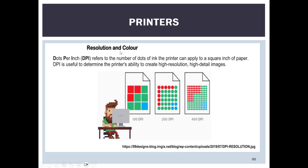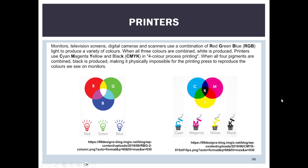For printers, resolution is measured in dots per inch (DPI) — the number of dots of ink the printer can apply to a square inch of paper. You can see what 100 DPI, 200 DPI, and 400 DPI look like. The higher the DPI number, the better and clearer the image will be.